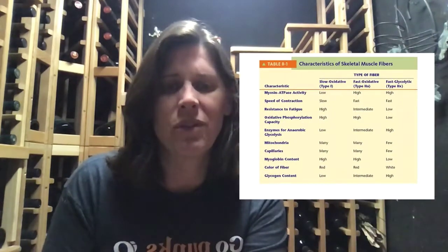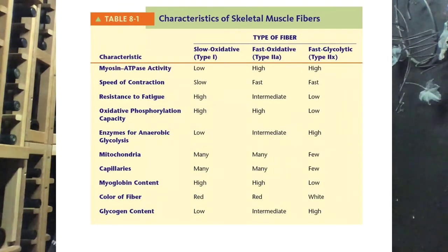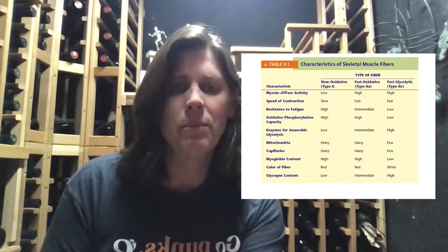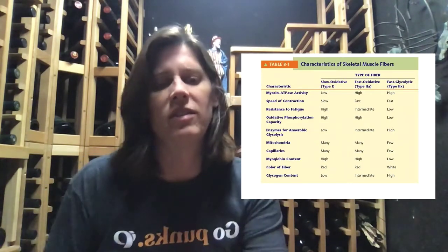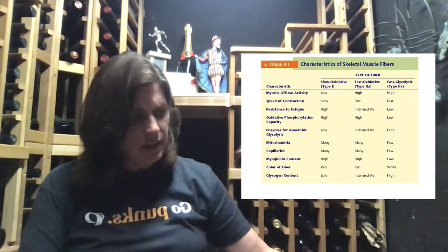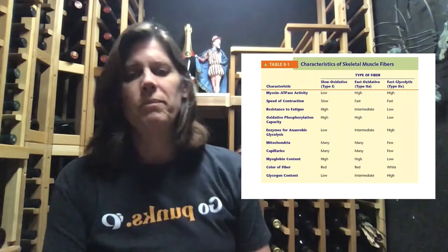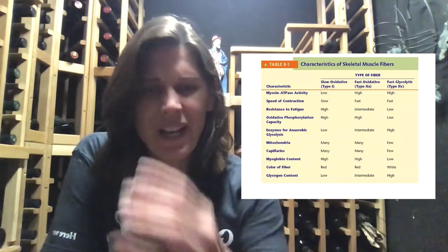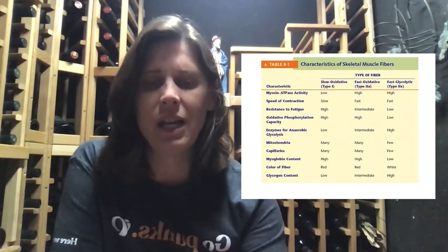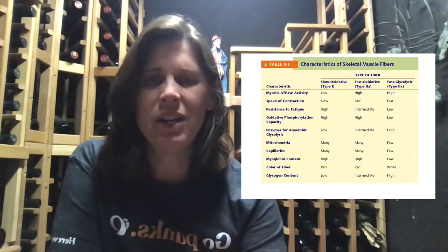Make sure you know those three fiber types — slow oxidative, fast twitch oxidative, and fast twitch glycolytic — and what characteristics define each. There's a great table in your book showing the differences and how they manifest. The key idea is that slow twitch fibers are for long-distance sustained contractions. There's one more lecture in this series covering smooth muscle and a little bit on cardiac muscle. Hope you guys are having a good day — bye bye.